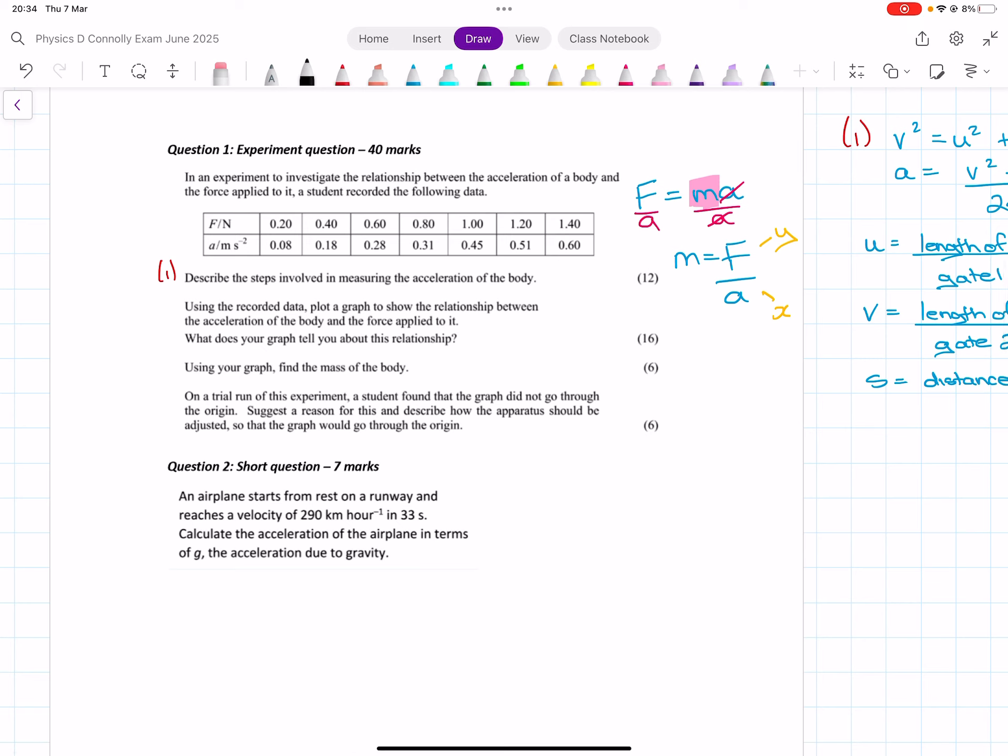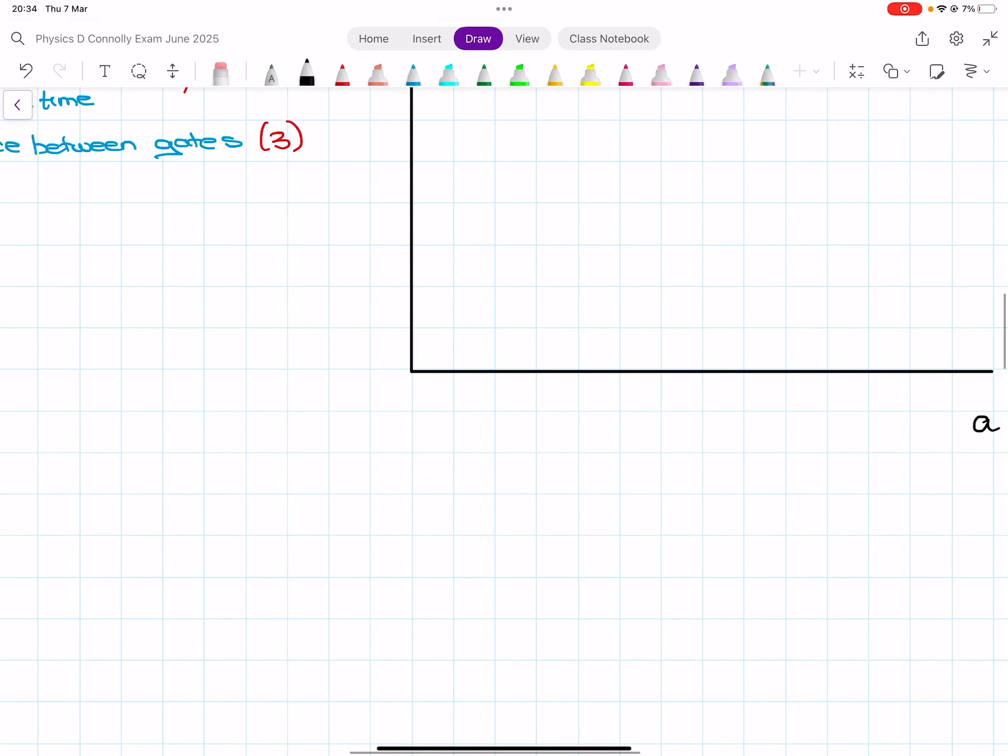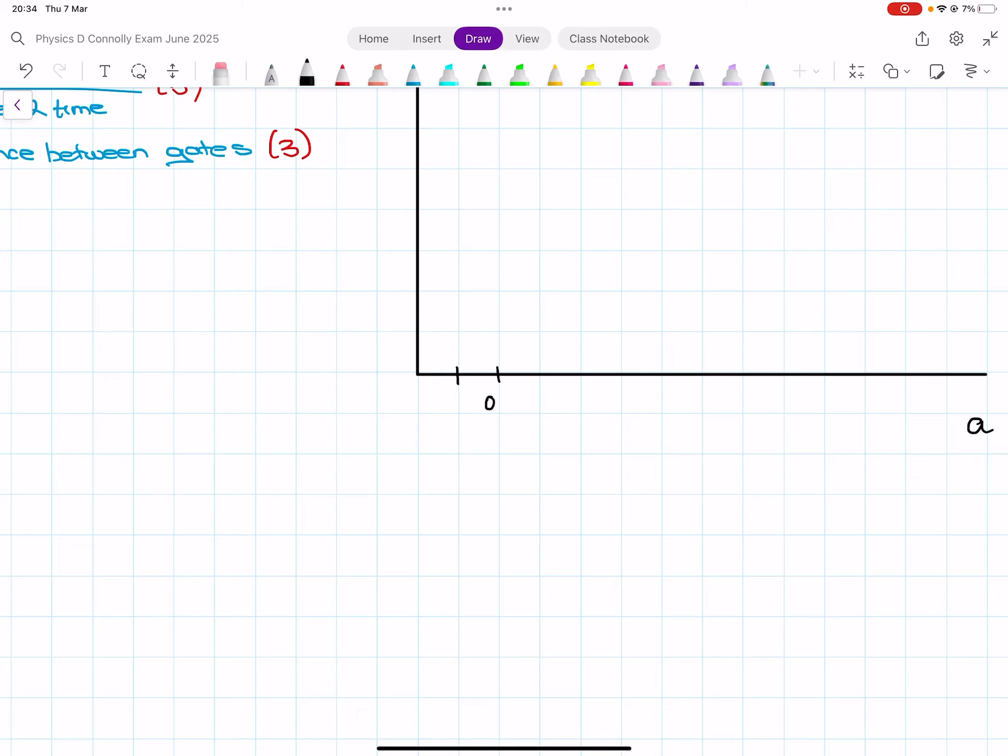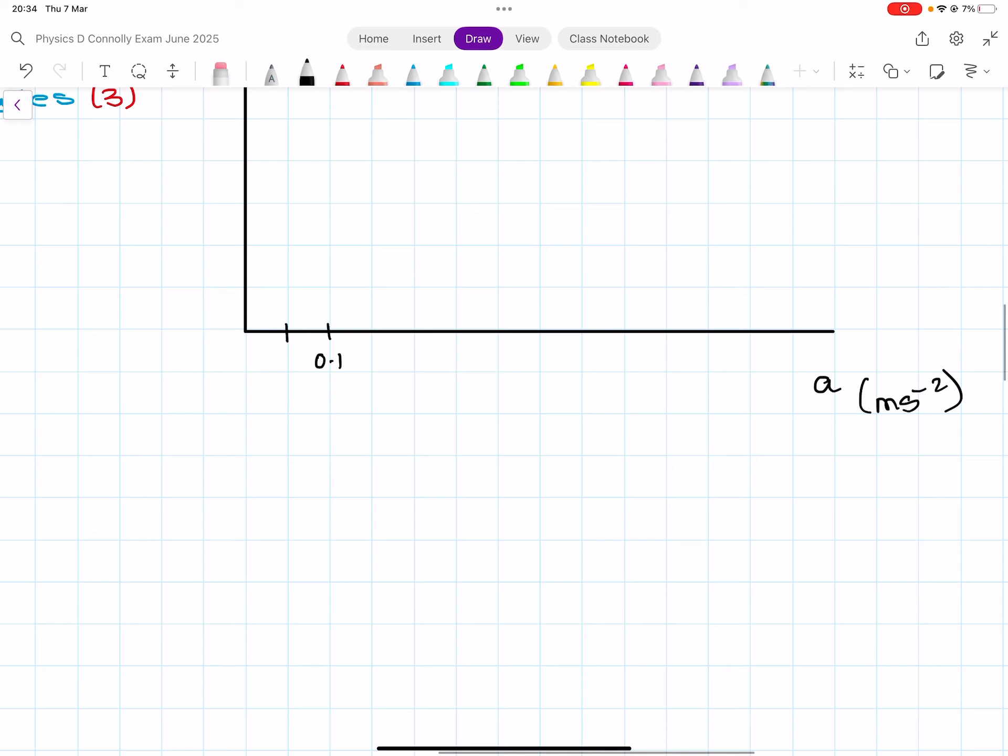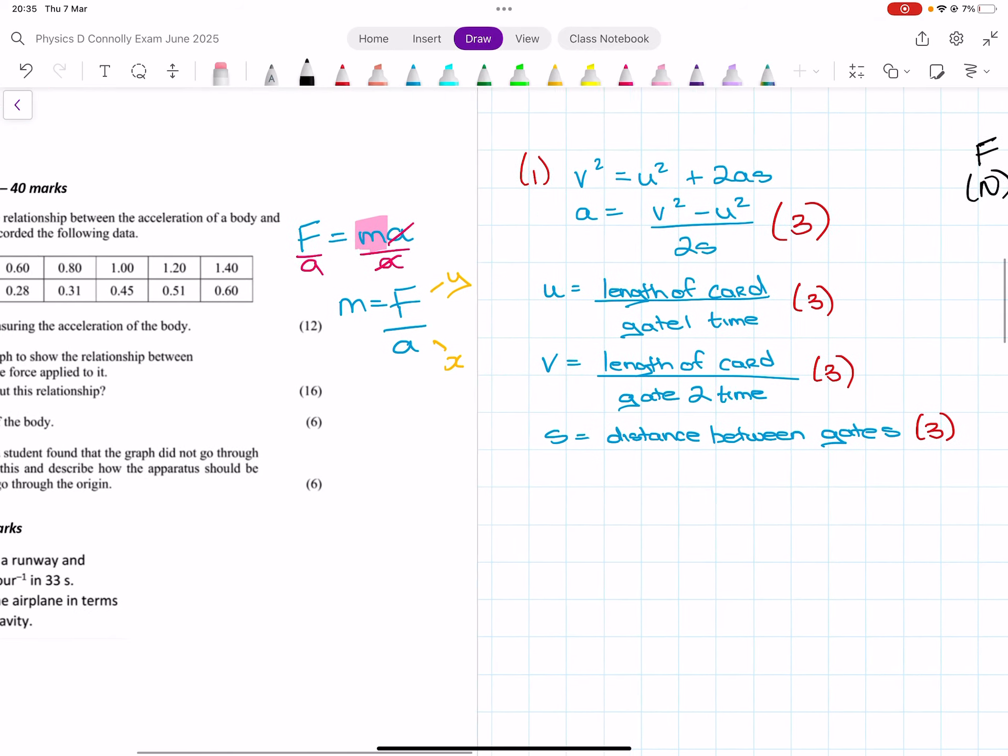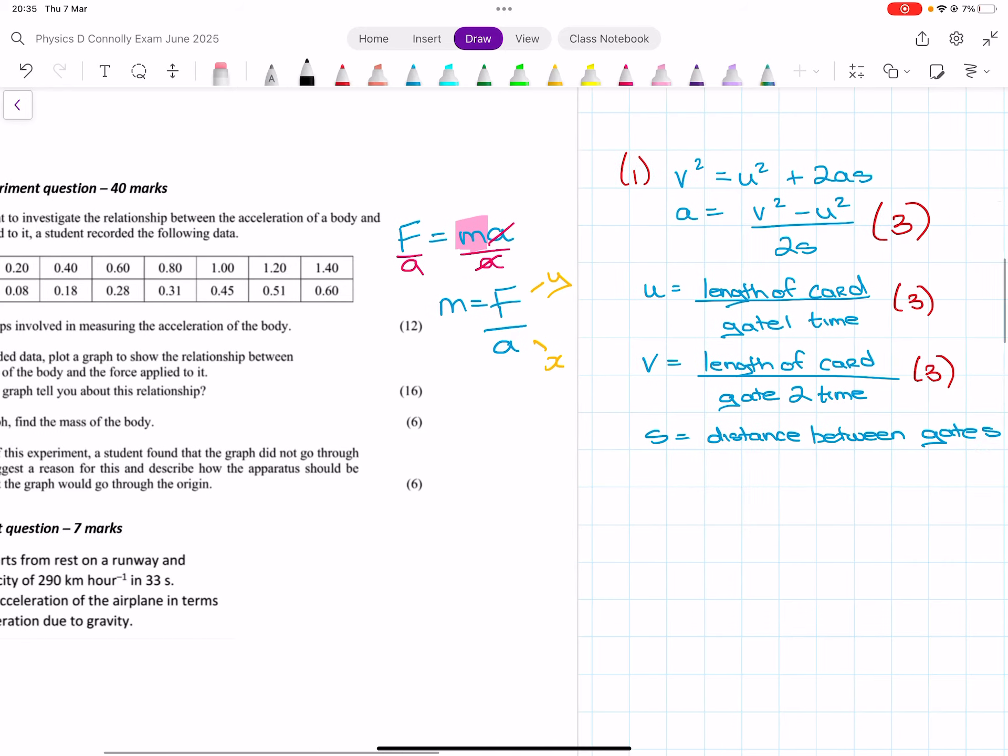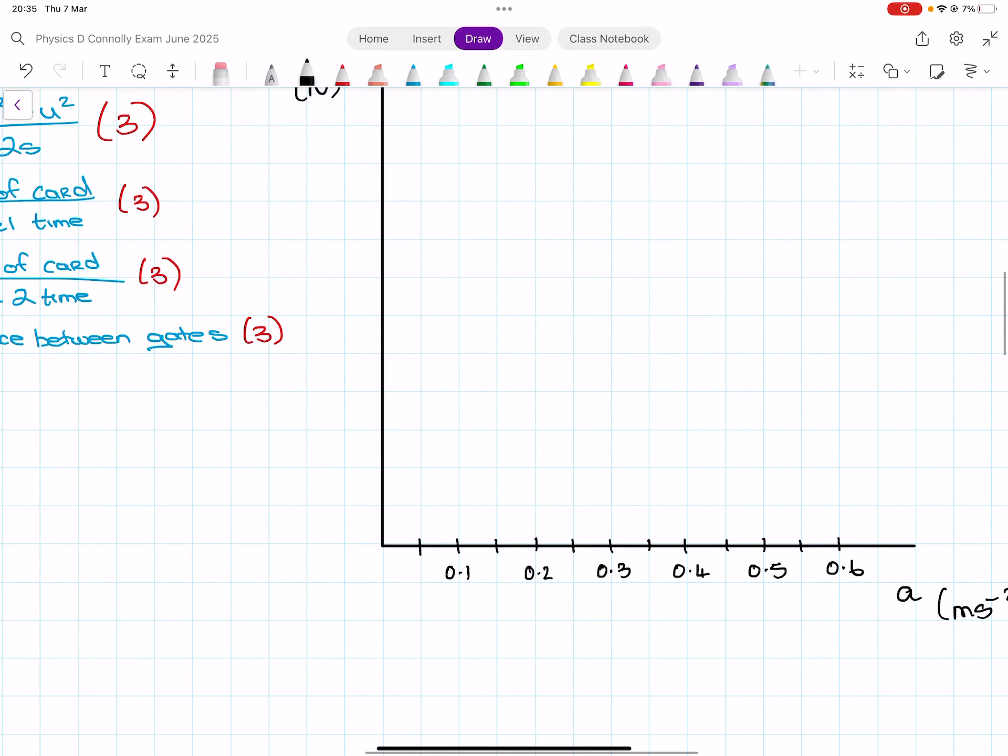Okay. So, 0.05, 0.1, 0.15, 0.2, 0.25, 0.3, 0.35, 0.4, 0.45, 0.5, 0.55, and 0.6. The force is nice. It just goes up in 0.2s.